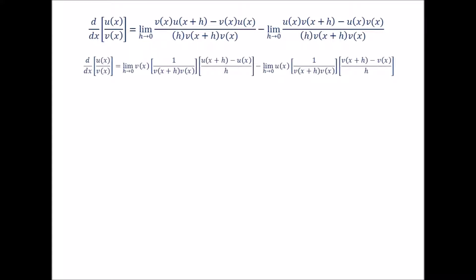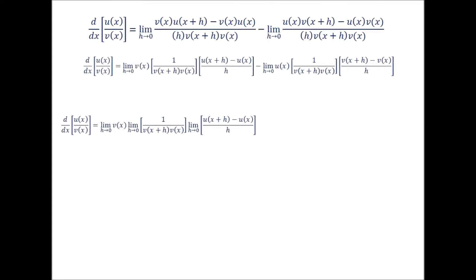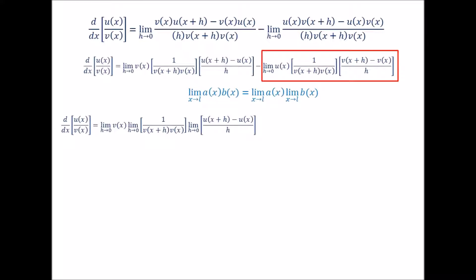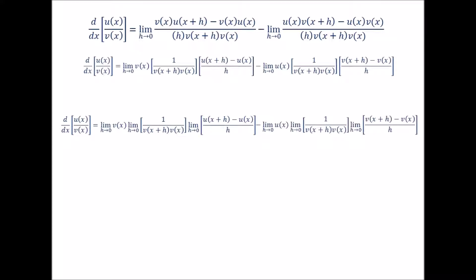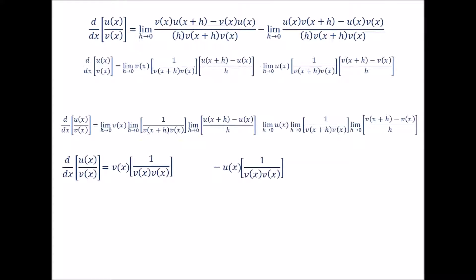We now apply the limit property that the limit of the product of two functions is equal to the product of the limit of each of those functions — first on our first limit, then on our second limit — getting three limits in turn for our second limit. We can now pretty much see what the answer is going to look like. Evaluating the first and fourth limits gives v of x and u of x, and evaluating the second and fifth limits — 1 over v of x plus h times v of x — gives 1 over v of x times v of x, plugged into our rule.